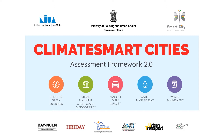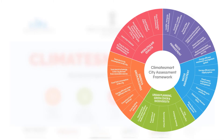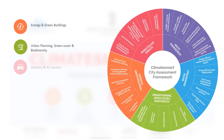After successful implementation in 2019, this year the Climate Center for Cities, also known as C-Cube, is supporting the ministry in its second phase. The objective of the assessment is to provide a roadmap for Indian cities in combating climate change by providing a framework of 28 indicators under five thematic areas.